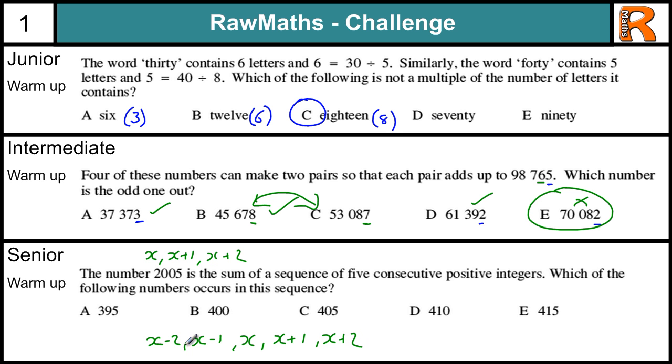Because when we add all those five things up, because we want the sum of the sequence of five numbers, then we add these five up, we actually just get 5x. And that makes it a lot easier to divide into 2,005. So we do 2,005 ÷ 5 and that gives us 401.